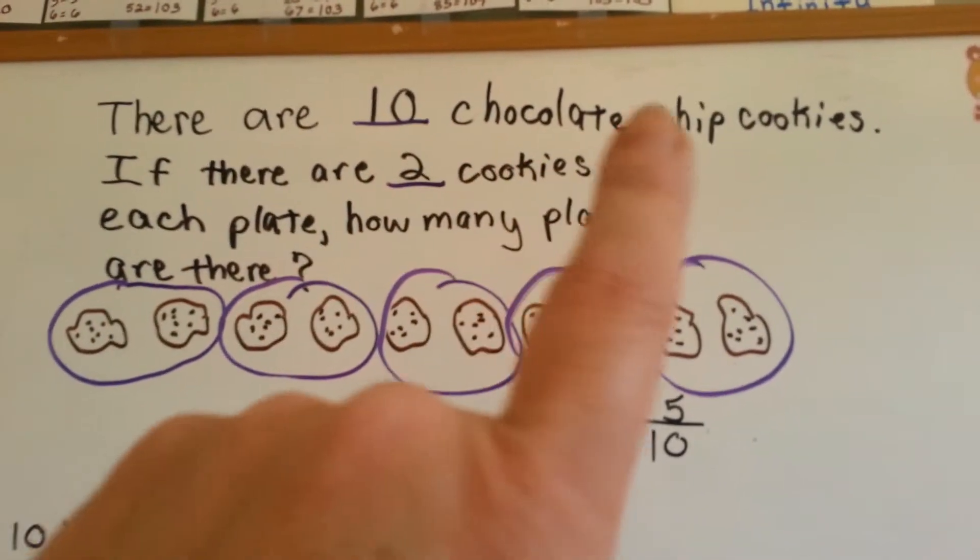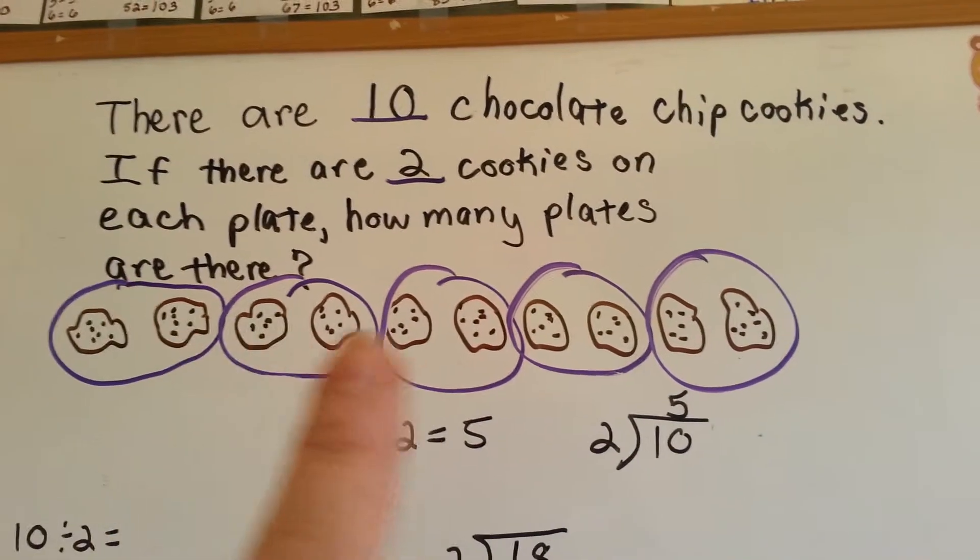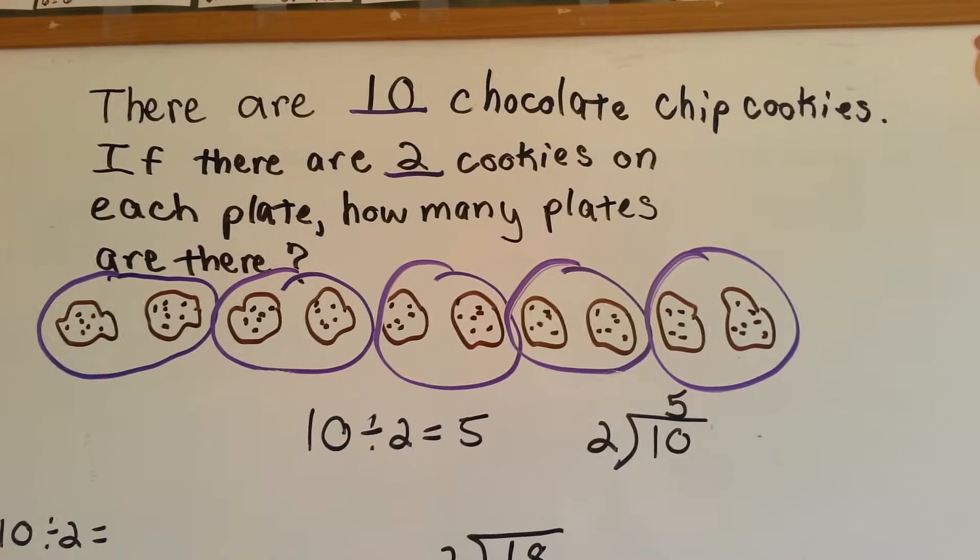Let's take a look at this. There are 10 chocolate chip cookies. If there are two cookies on each plate, how many plates are there?